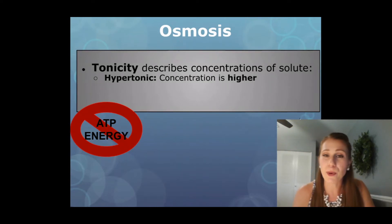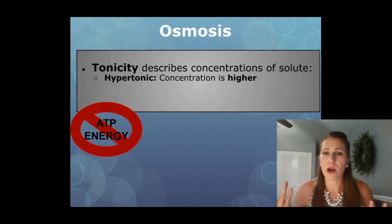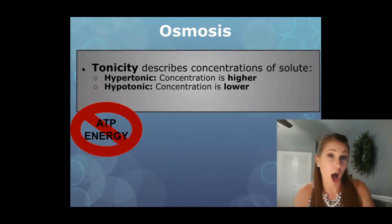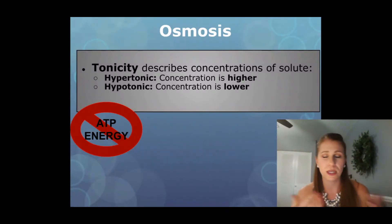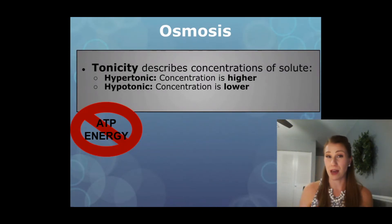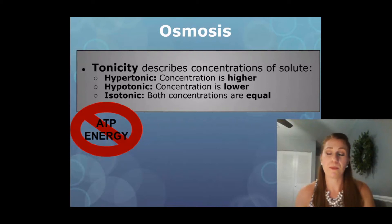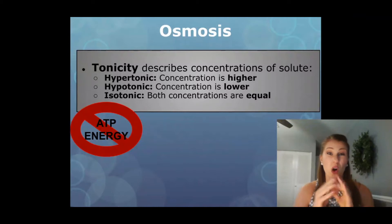We call something hypertonic if the concentration is higher — hyper means higher, like if someone were hyperactive, they would have a higher level of energy. Hypotonic would be the opposite: it's where the concentration is lower. I remember with the rhyme 'hypo is low.' You can also think of hypothermia — you get hypothermia when it's really cold and the temperature is really low, so hypo means low. And then isotonic: when both concentrations are equal, they are isotonic. Isotonic is what our cells want to get to — that's homeostasis, that nice even keel.